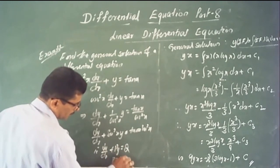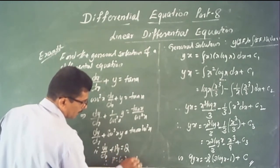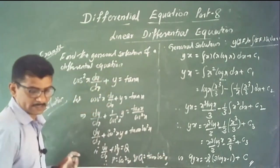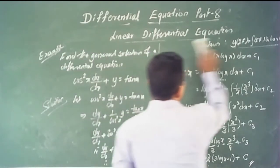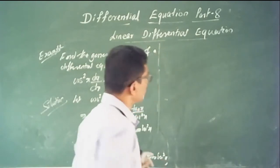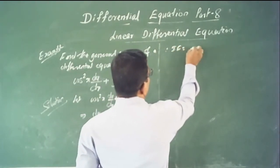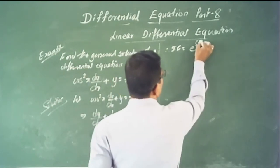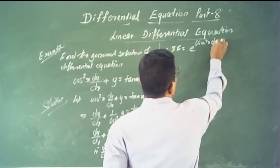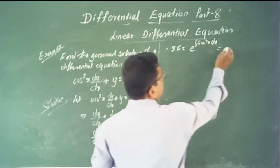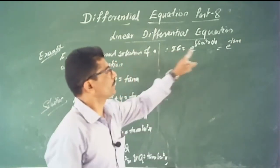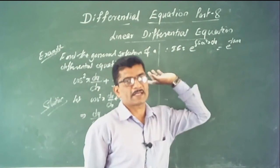Here P = sec²x and Q = tan x · sec²x. Find the integrating factor: I.F. = e^(∫sec²x dx). The integration of sec²x with respect to x is tan x. Therefore the integrating factor is e^(tan x).